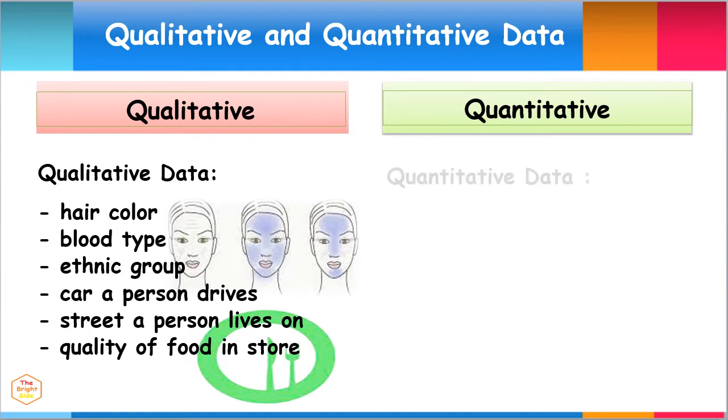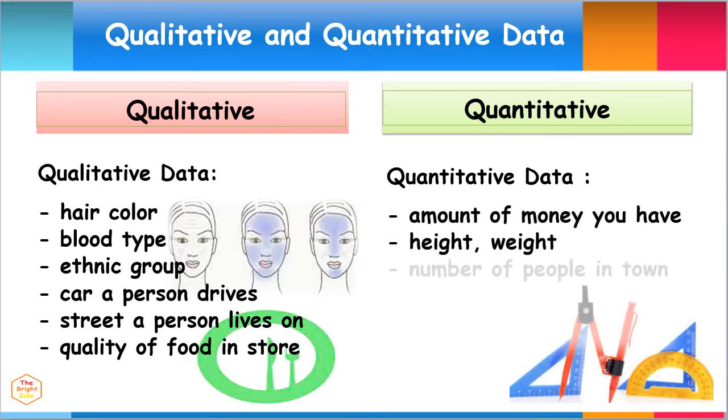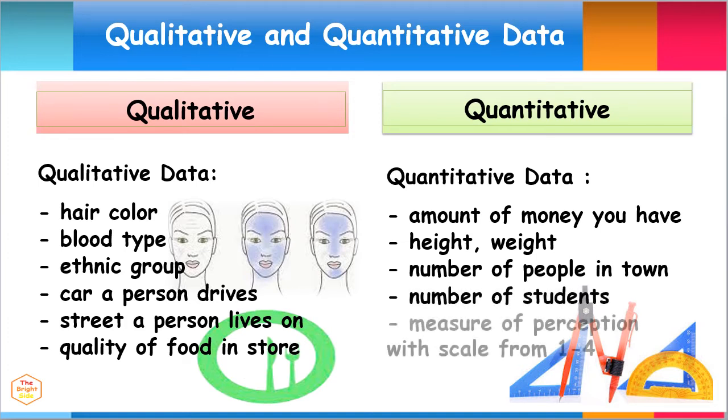For quantitative data, examples can be the amount of money you have, height, weight, number of people in town, number of students, or measures of perception with a scale from one to four on the quality of food.